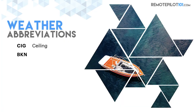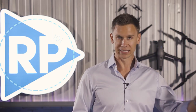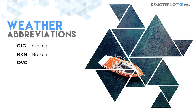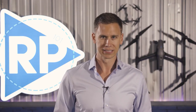The ceiling is the lowest broken or overcast layer above the ground. The letters BKN tell us the sky is broken — broken is five-eighths to seven-eighths of coverage. OVC means overcast, which is a solid layer of clouds. Remember this: scattered clouds are not a ceiling. Few clouds are not a ceiling. Overcast or broken clouds are your ceilings.